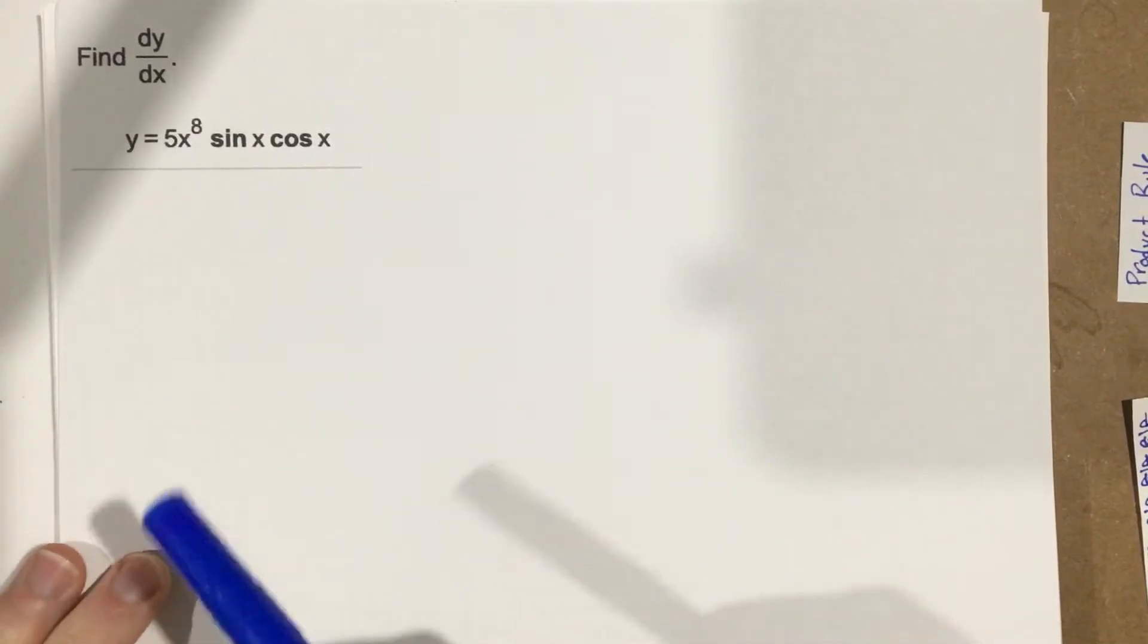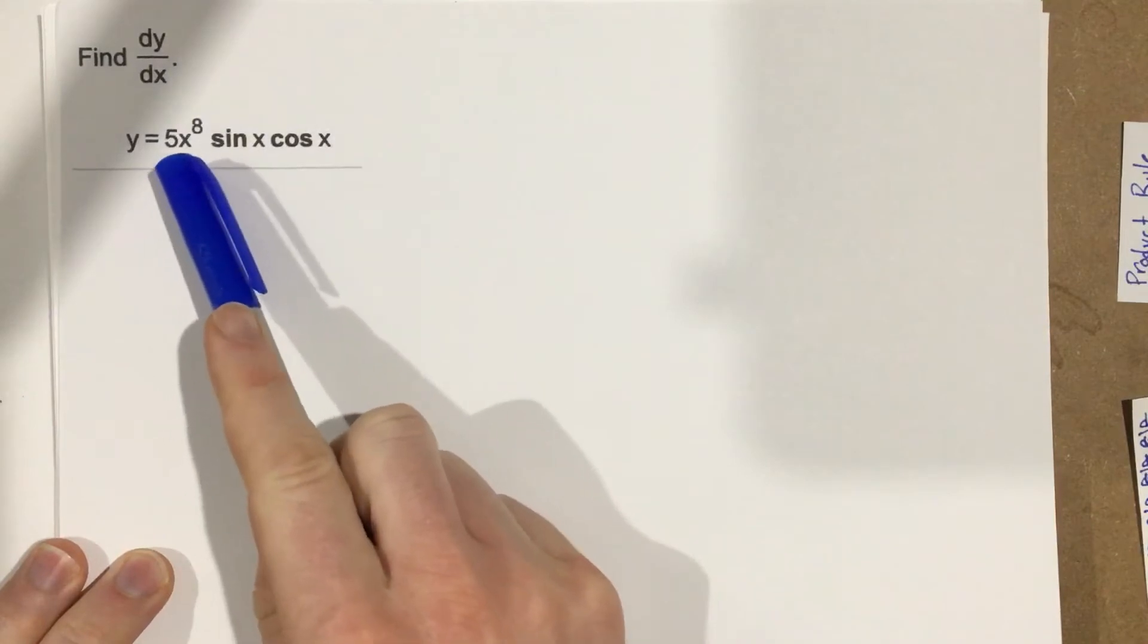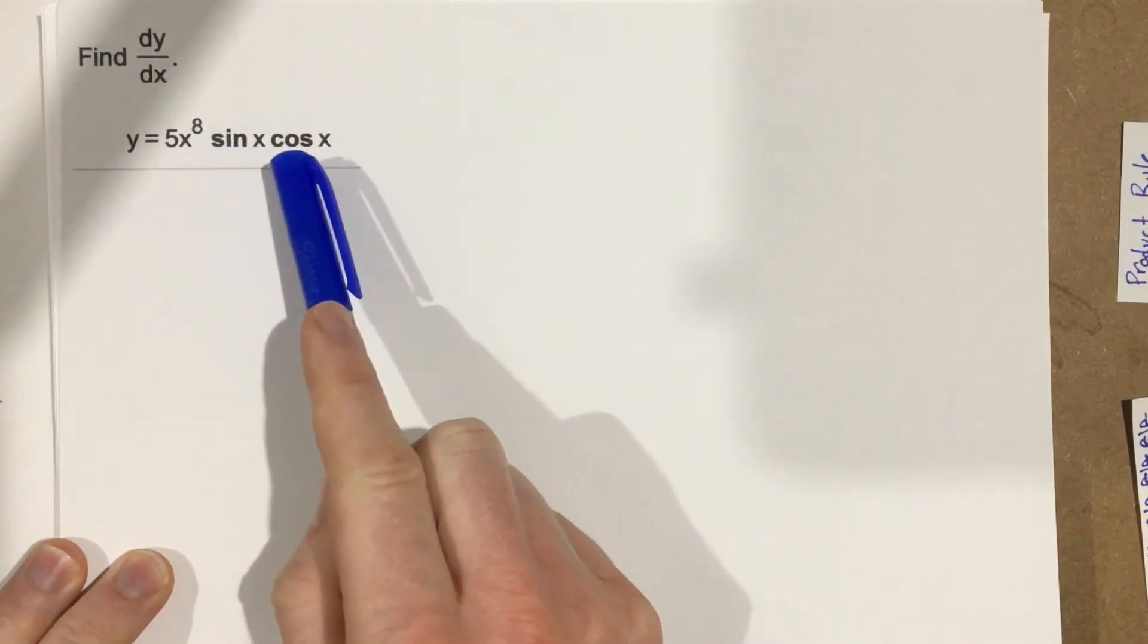This is problem number 7 from section 3.5. The problem says find dy over dx, and they give you y equals 5x to the 8th sine x times cosine x.